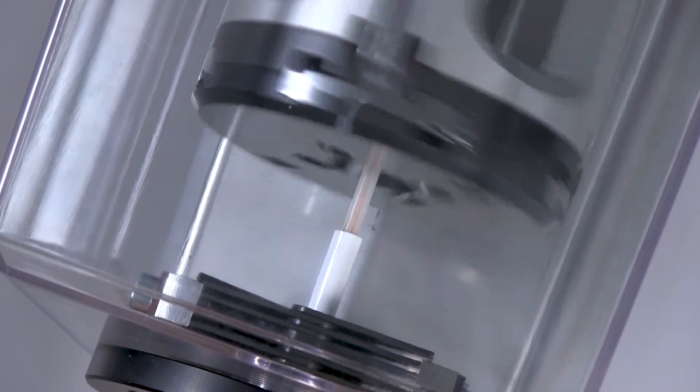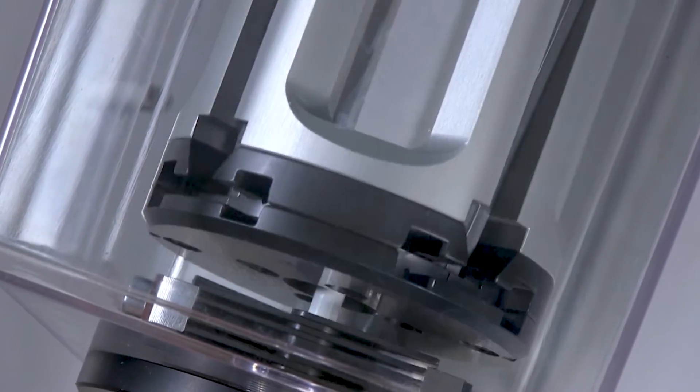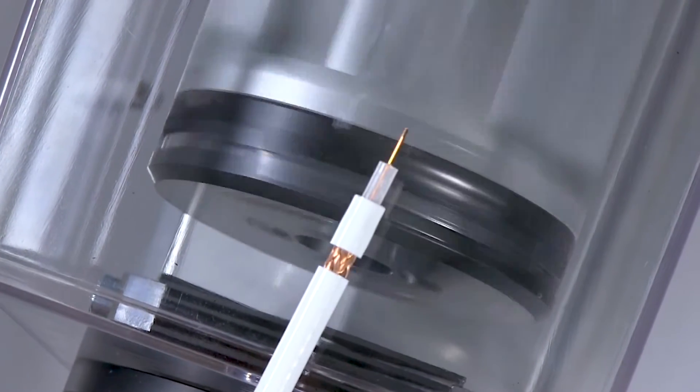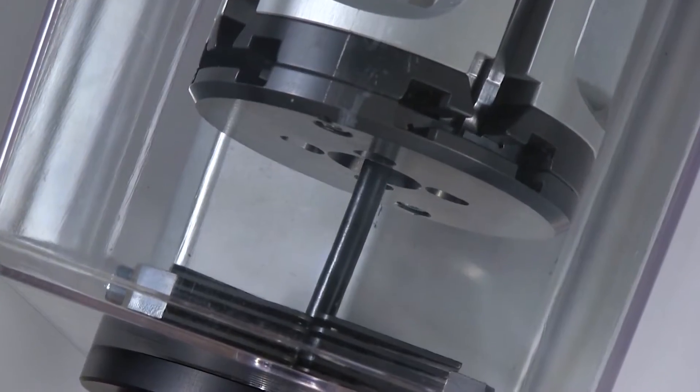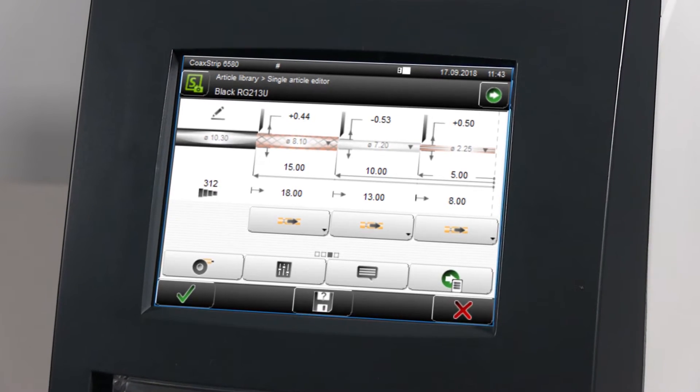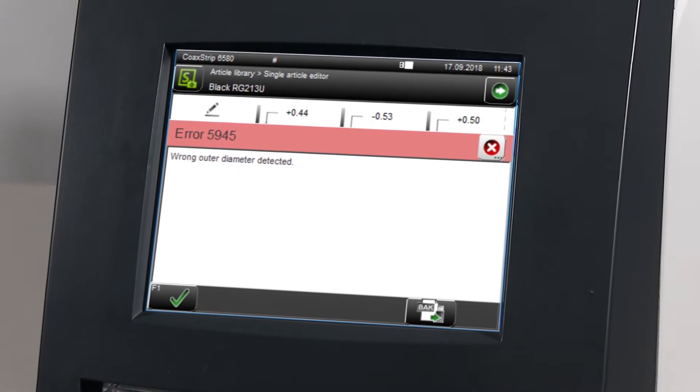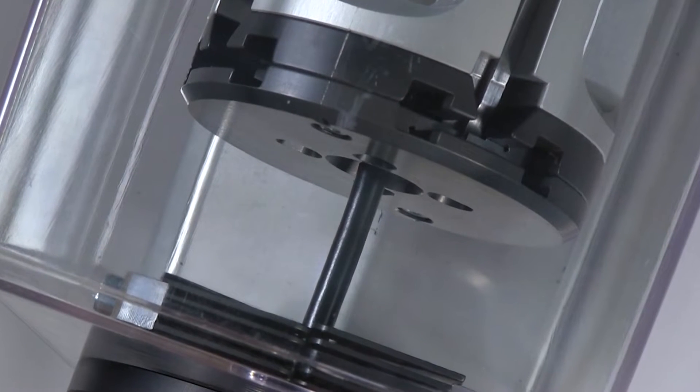Numerous programmable processing parameters allow for the highest processing flexibility and quality. For example, the cable diameter verification prevents an incorrect cable size from being processed.